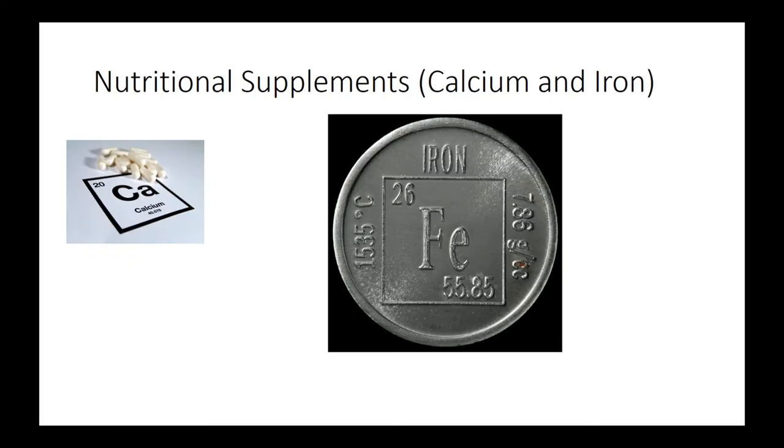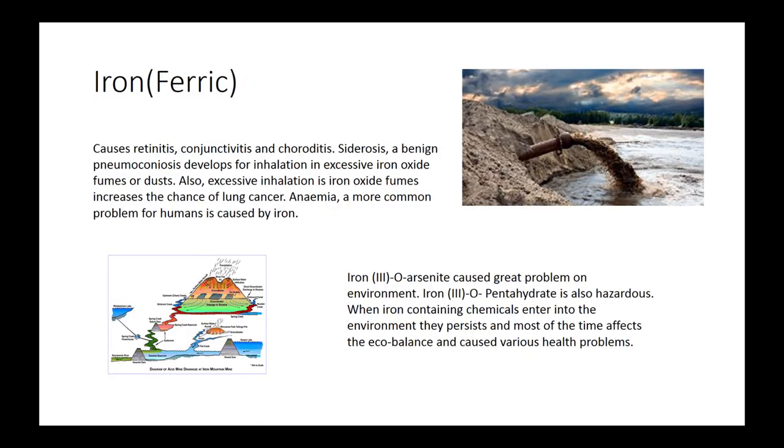And we have nutritional supplements. These are also less talked about. You have calcium and iron nutritional supplements. And now we have iron, which they specified ferric this time. So iron causes retinitis, conjunctivitis, and choroiditis. It can cause lung cancer and anemia. It can also cause a problem in the environment. It's hazardous and can affect the ecological balance. If you want to look here at an iron mountain mine, you can see what happens when you have iron coming through here.